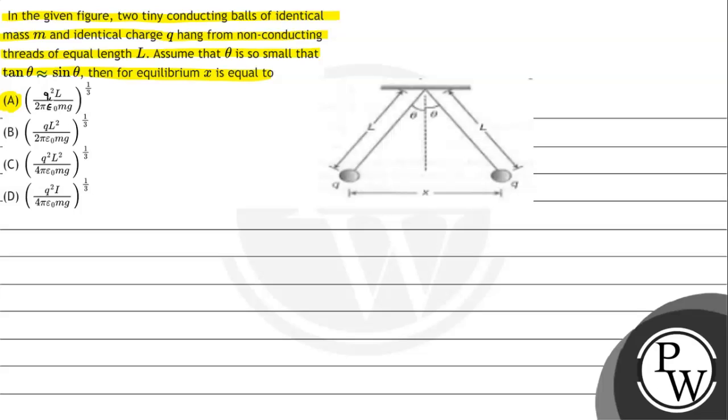Option A: (q²L / 2πε₀mg)^(1/3). Option B: (qL² / 2πε₀mg)^(1/3). Option C: (q²L² / 4πε₀mg)^(1/3). Option D: (q²L / 4πε₀mg)^(1/3). So this is L over here.